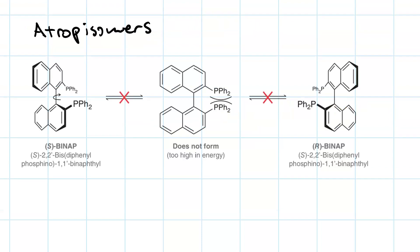One example is atropisomers: S-BINAP and R-BINAP. These two bicyclic systems are rotation restricted — that is, they can't rotate freely around each other. So you've got this configuration or this configuration. They're mirror images and not superimposable; therefore, the molecule is chiral. And they don't exchange with each other.